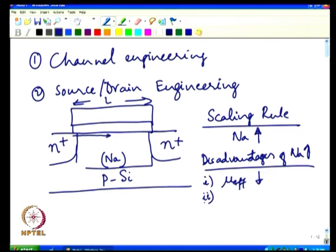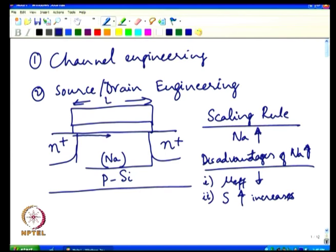There are other important considerations. The sub-threshold slope depends on the non-ideality factor, which is 1 + C_D/C_ox. We want to minimize C_D. However, increasing N_A increases C_D and makes the sub-threshold slope worse — instead of approaching 60 mV/decade, it moves further away from 60 mV/decade because of the increased doping concentration.